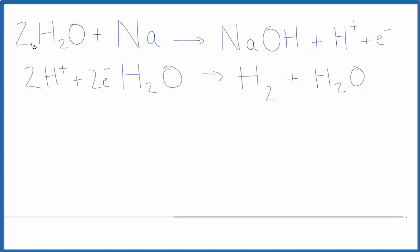So we can multiply everything here by two and that would fix the electrons. Now we can put all of this together for a final equation.